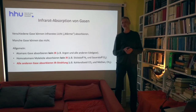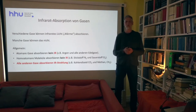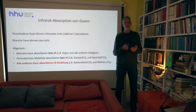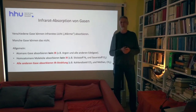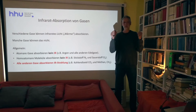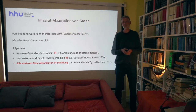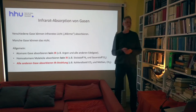Ein Beispiel für ein atmosphärisches Gas, wo das nicht der Fall sein kann, ist Argon – weil Argon ein atomares Gas ist und ein Atom nicht schwingen kann. Eine Schwingung ist immer eine Bewegung von mindestens zwei Atomen in einem Molekül gegeneinander. Wesentlich mehr in der Atmosphäre sind Stickstoff und Sauerstoff – Stickstoff zum allergrößten Teil und Sauerstoff ungefähr 23 Prozent. Wenn diese Moleküle schwingen, bleibt der Ladungsschwerpunkt in der Mitte – das Dipolmoment ändert sich während der Schwingung nicht. Dasselbe gilt für Sauerstoff. Wenn sich das Dipolmoment nicht ändert, können diese Moleküle keine Infrarotstrahlung absorbieren.